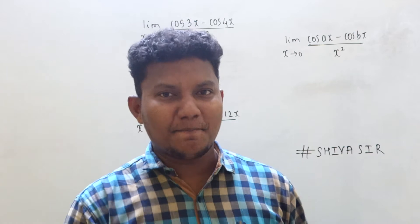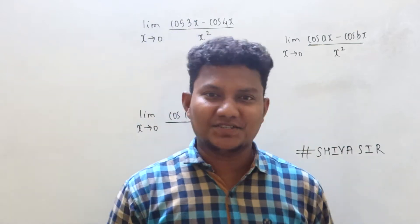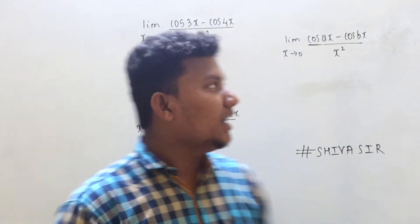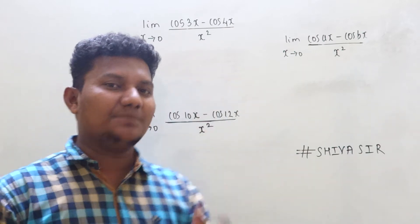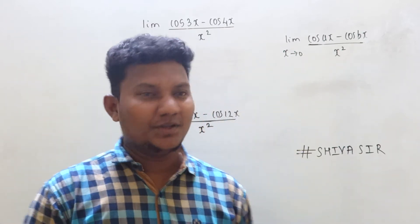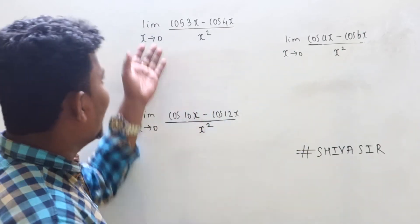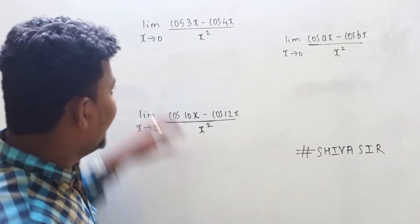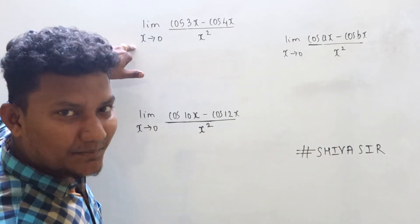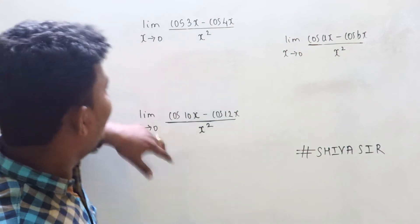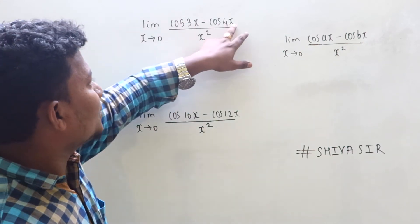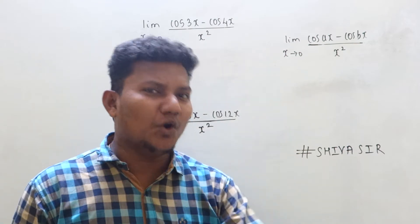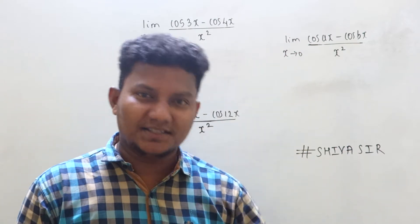Good morning everyone. I'm back with some tricks. In this video we will see how to find the answer for this type of sum in just a fractional second. You all might be knowing how to find the answer in the traditional way for sums like: limit x tends to 0, cos(3x) minus cos(4x) upon x square.